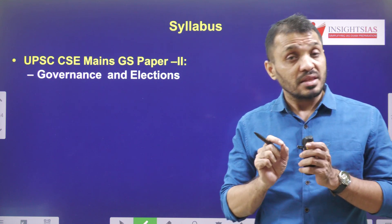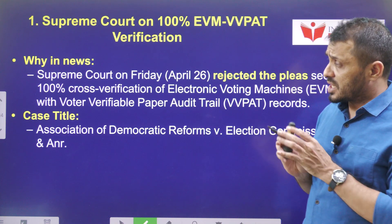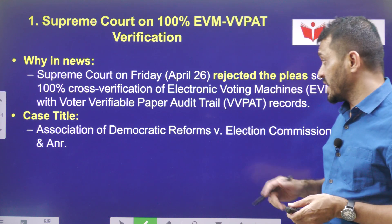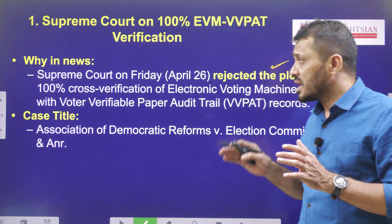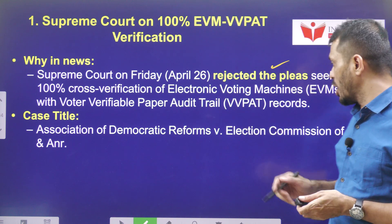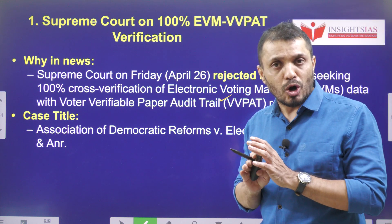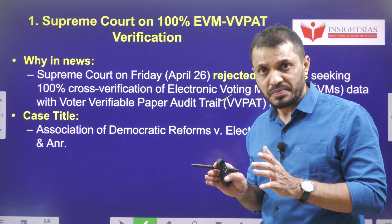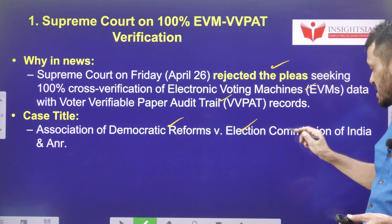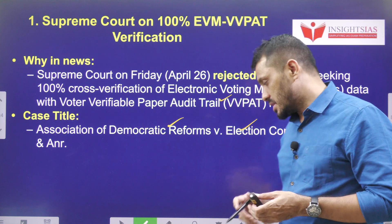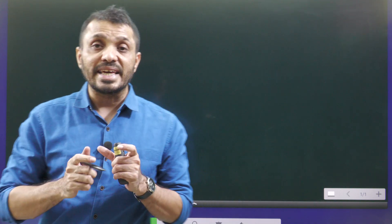The context is that the Supreme Court gave a judgment in which it rejected all pleas regarding 100% cross-verification of EVM data with VVPAT records. The name of this case is Association of Democratic Reforms versus Election Commission of India.